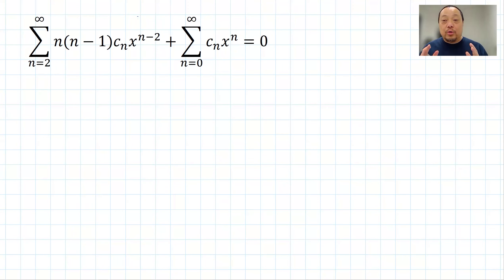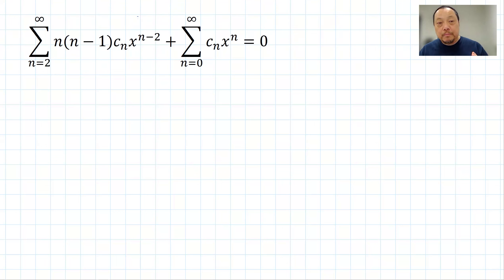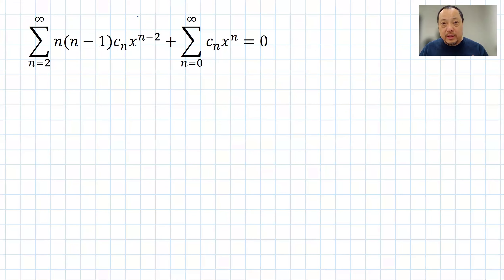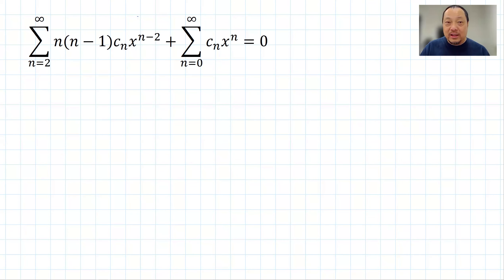There are two ways of doing this: a fast way and a slow way. Most people will be able to shift the index using the short, quick way. But I'll also show you the longer, slower way so that conceptually you come to accept that the short way is mathematically correct.